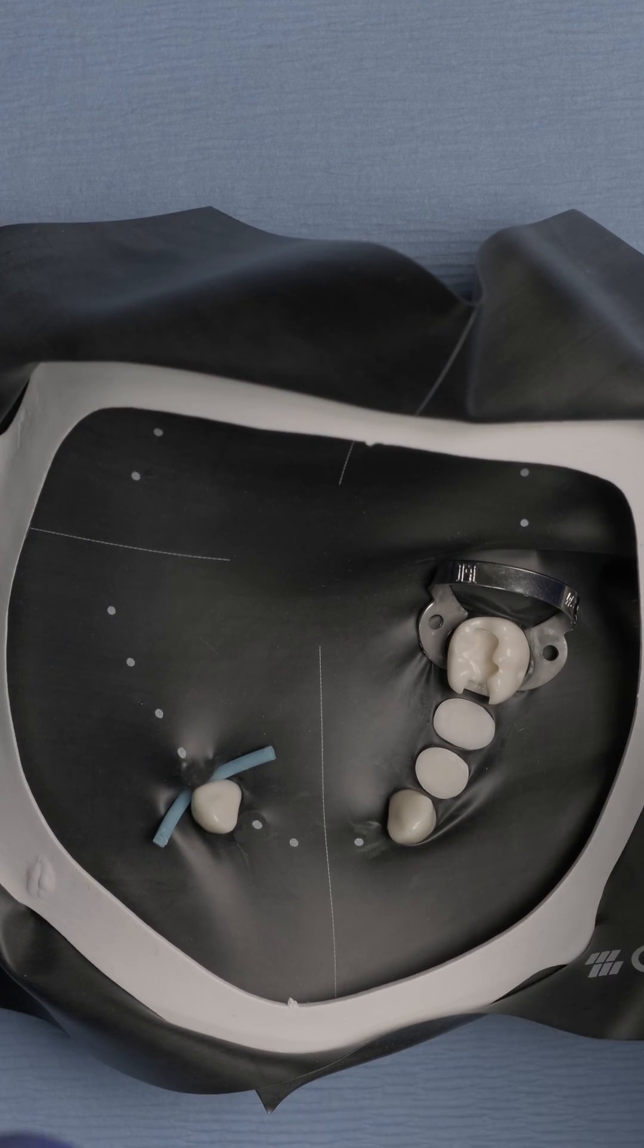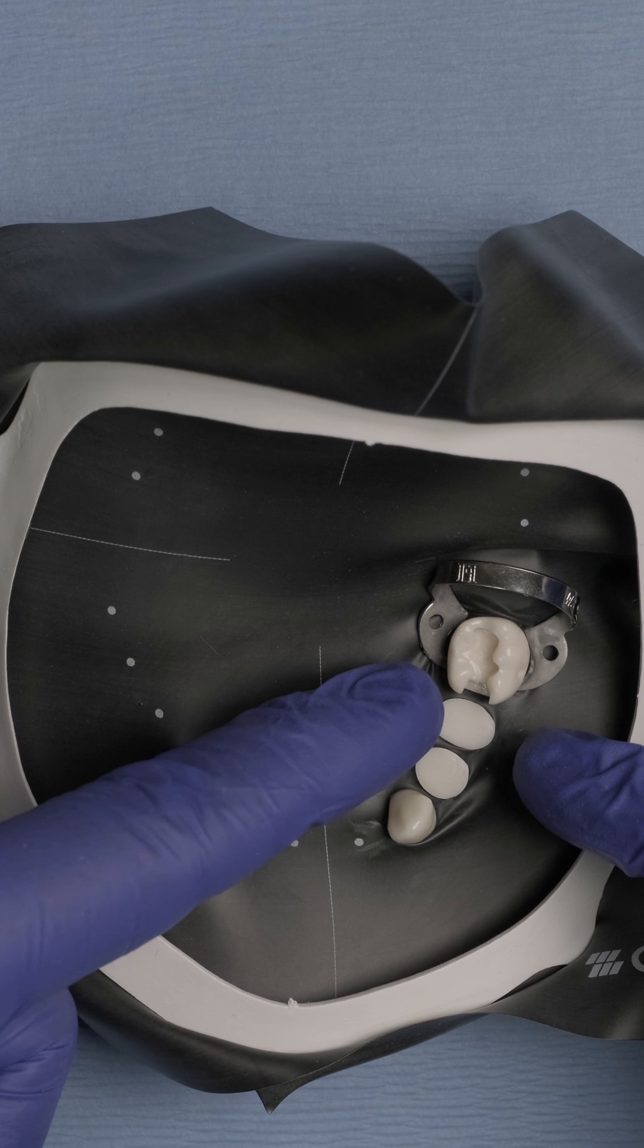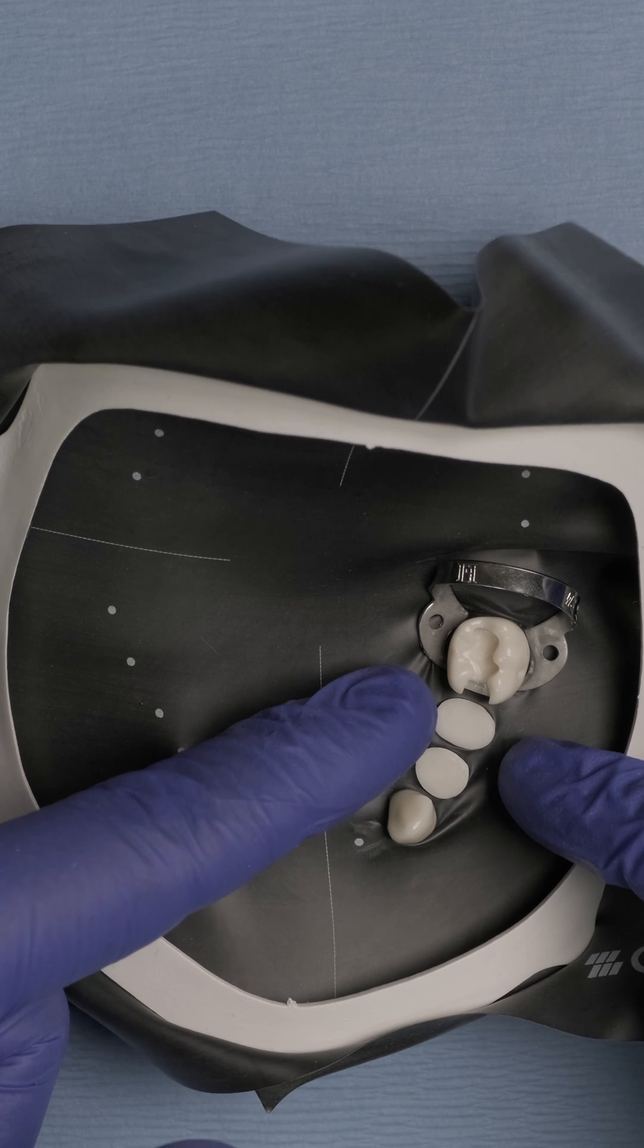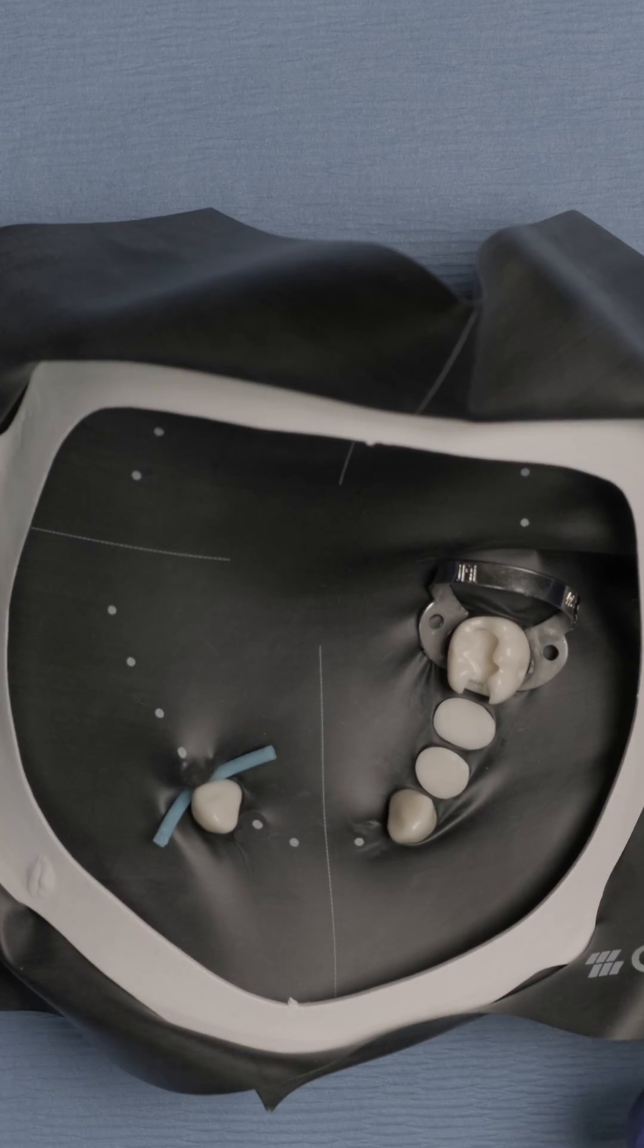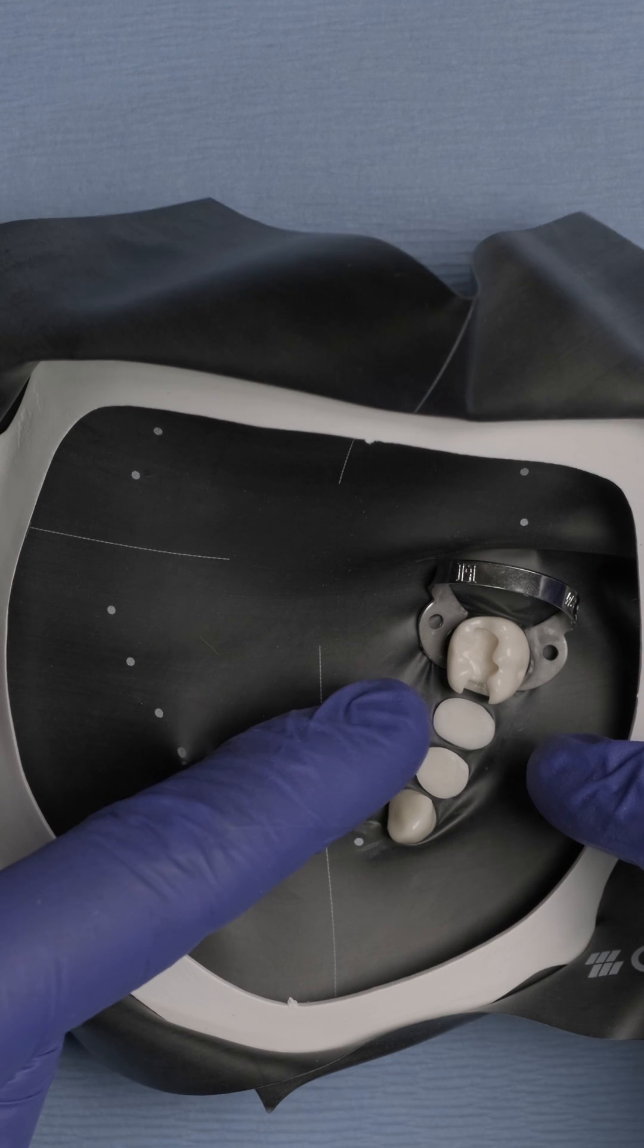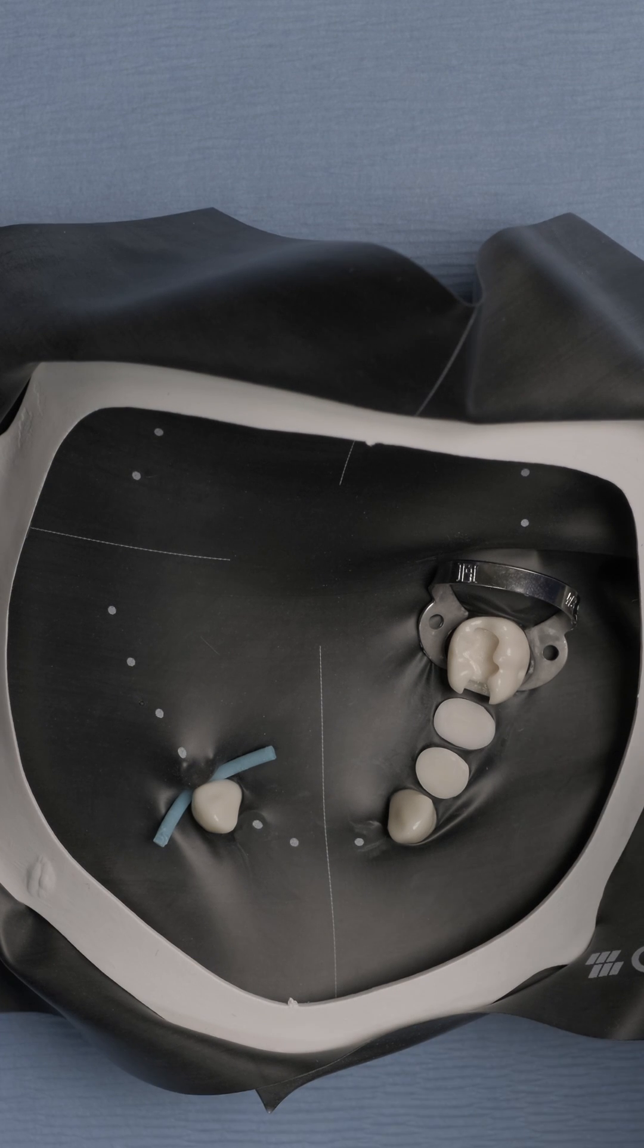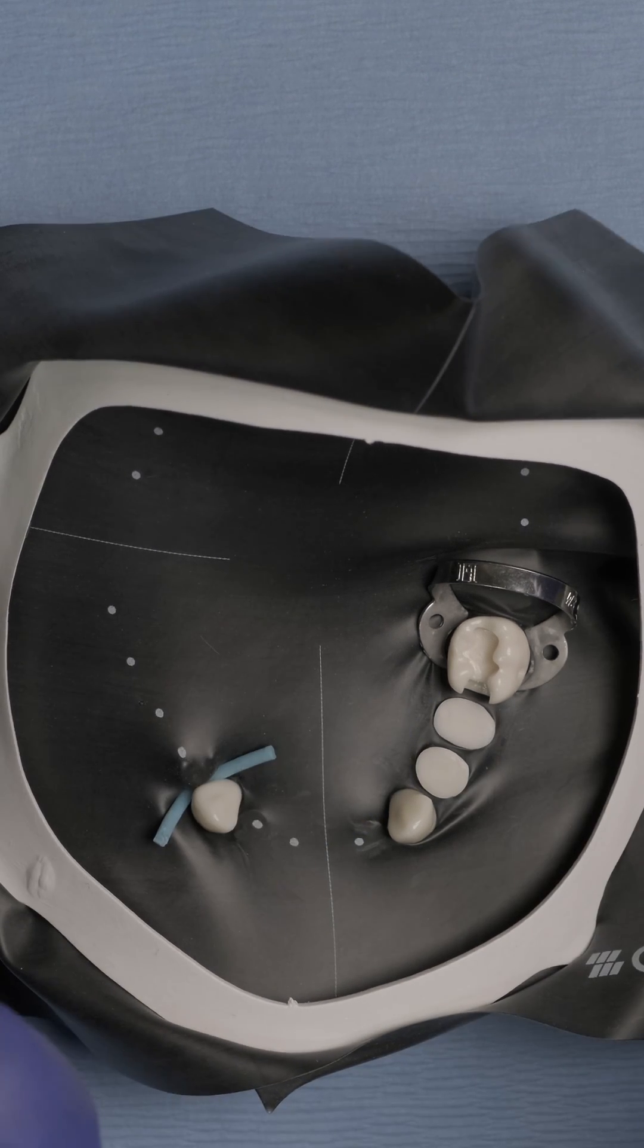And what I also want you to observe is that even though tooth number 20 and 21 are literally broken down to the gingival margin, this latex rubber dam has so much retraction potential that I was able, without an additional clamp, to isolate both teeth.